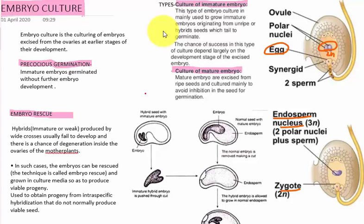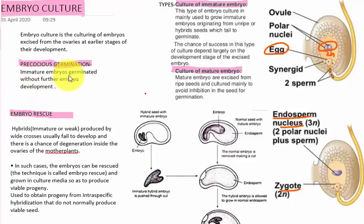In the second stage — the culture of mature embryo — the mature embryo is excised from the ripe seeds and cultured mainly to avoid inhibition of germination. Here comes one important term: precocious germination. It generally occurs in the immature embryo, when immature embryos germinate without further embryo development — that is called precocious germination.